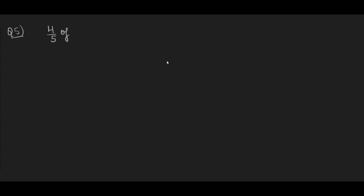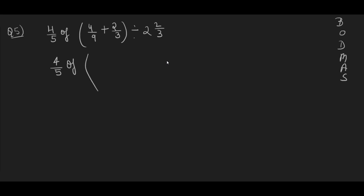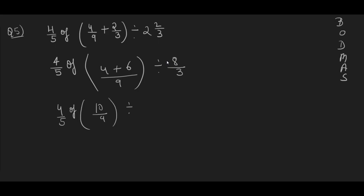Question number 5: 4/5 of (4/9 plus 2/3) divided by 2 and 2/3. Using BODMAS, solve the brackets first. LCM of 9 and 3 is 9, so 4/9 plus 6/9 equals 10/9. The mixed number 2 and 2/3 becomes 8/3. So we now have 4/5 of 10/9 divided by 8/3.